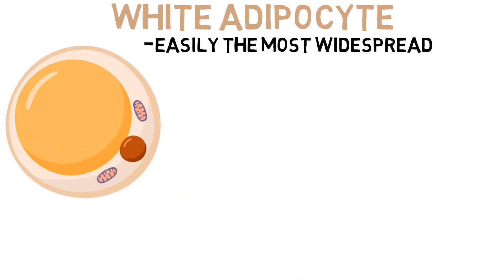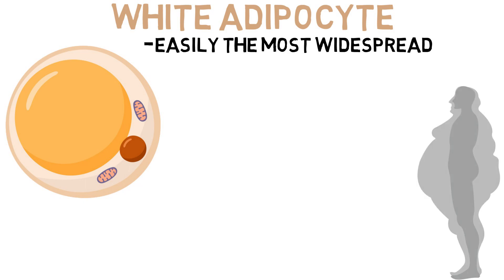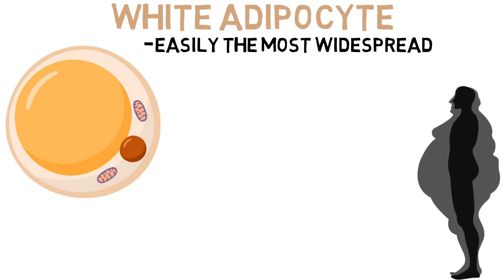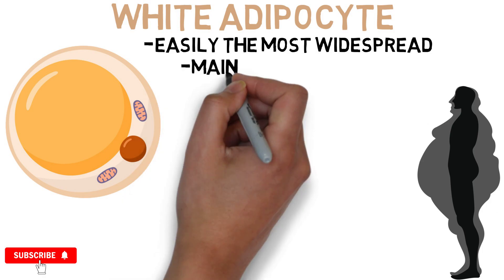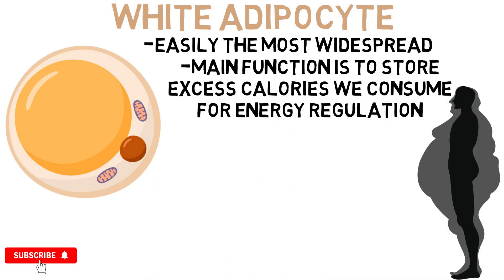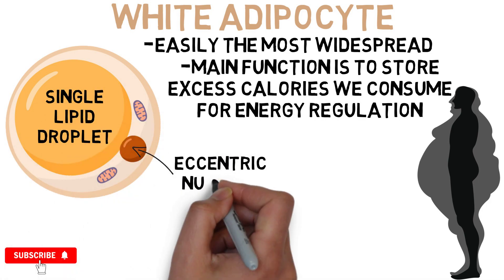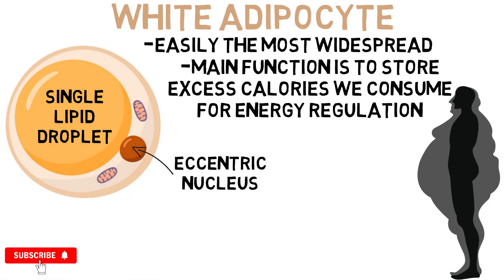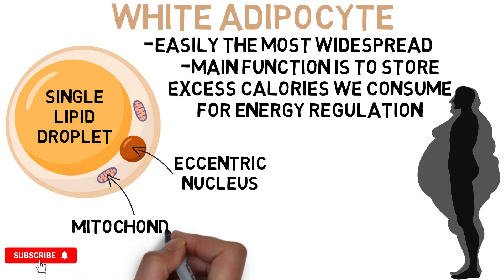Easily the most widespread fat cell is the white adipocyte. It's located all over our bodies and makes up the vast majority of our body fat from a cell perspective. Its main function is to store excess calories we consume as triglycerides for energy regulation. It consists of a single lipid droplet in the form of triglycerides, an eccentric nucleus, and a tiny number of mitochondria.